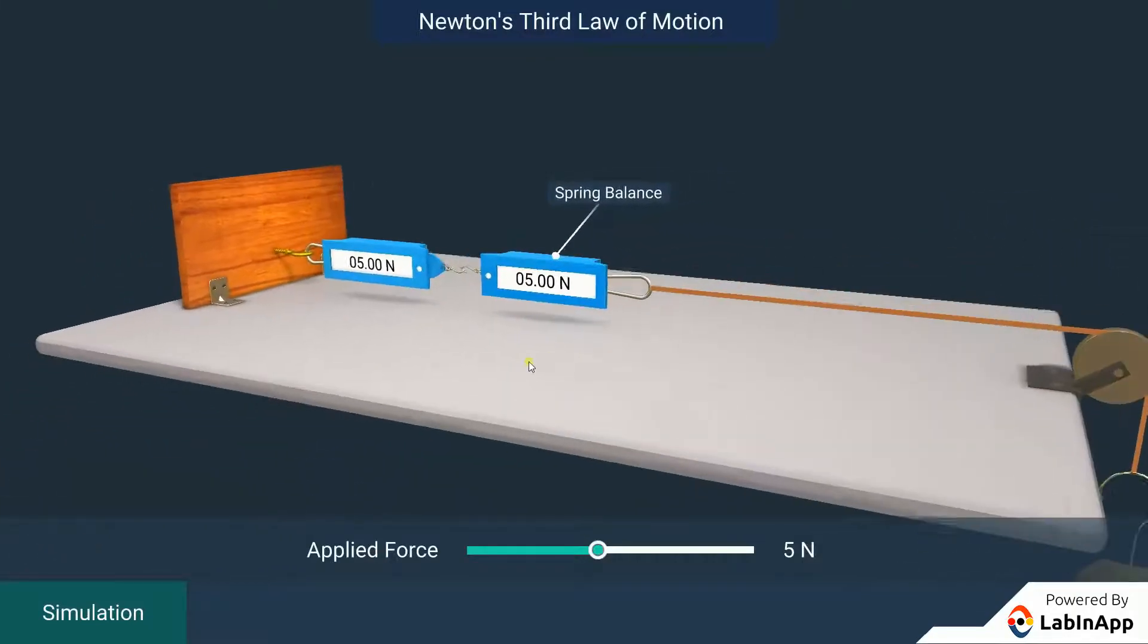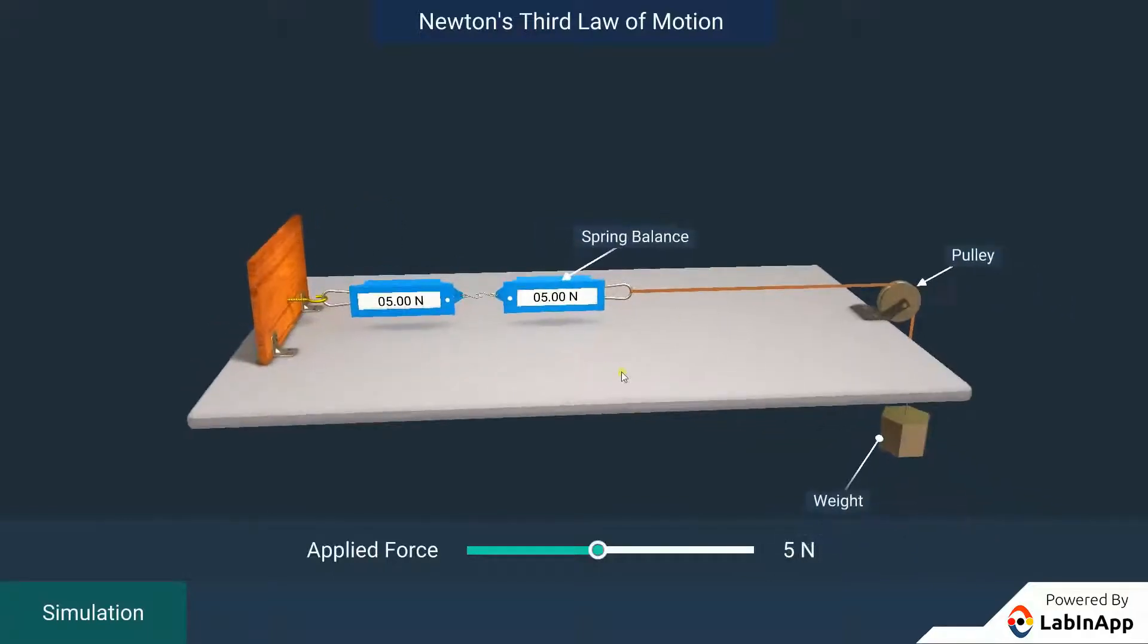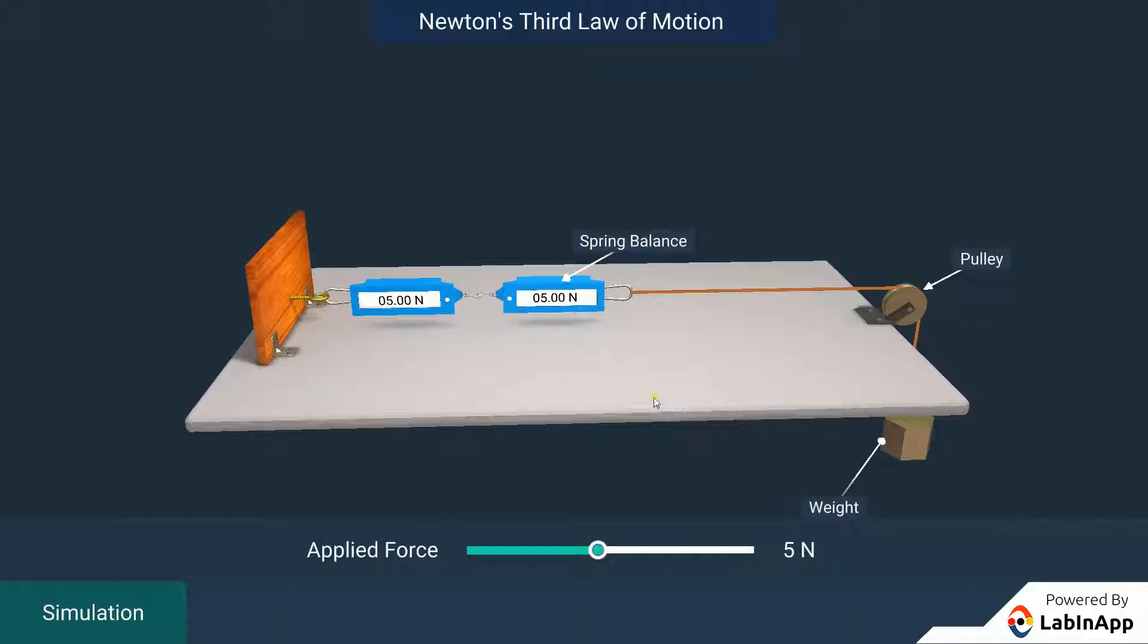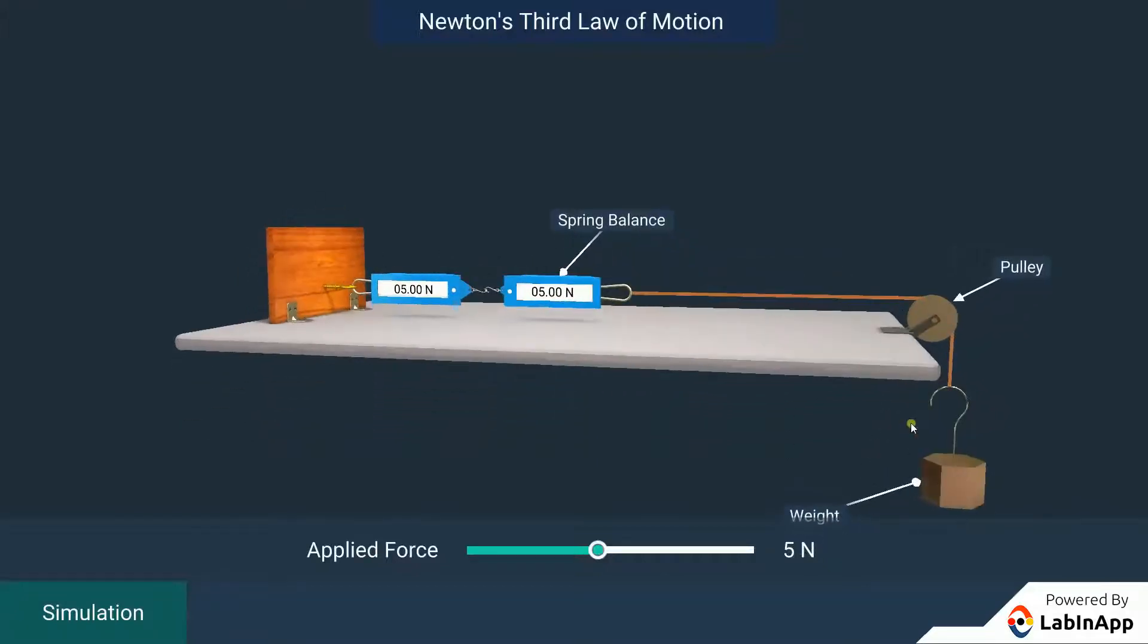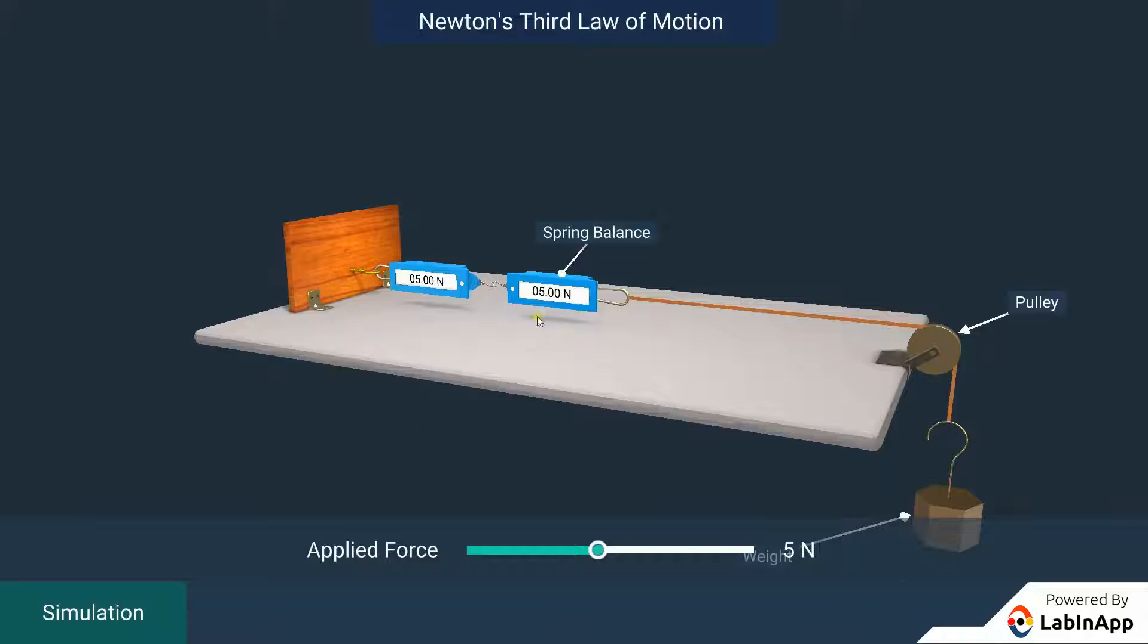In this activity, we have taken two spring balances connected to each other. The fixed end of one is connected to a rigid support like a wall. The other is connected to a pan of weights suspended by a pulley.